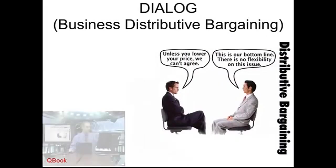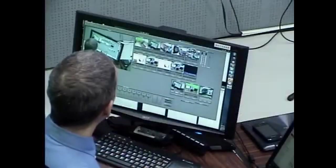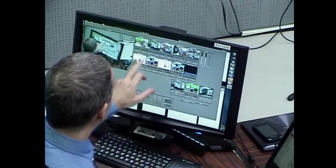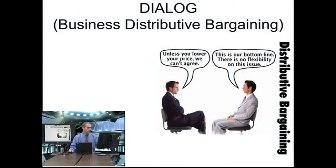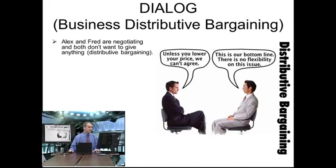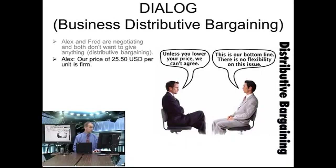Now let's jump over to a business example. In a business example, we're going to look at negotiation in a distributive situation. Last unit we were looking at planning for negotiation — now let's just look at the negotiation itself. Alex and Fred are negotiating, and both don't want to give anything. They don't want to give up, because if they give up anything, then the other side will get something, causing one side to lose and one side to win. A very common situation — they are negotiating over price.